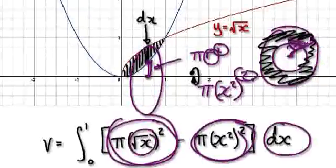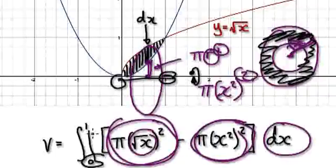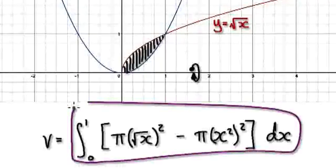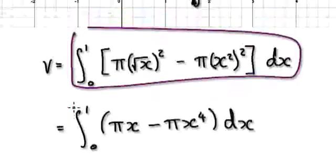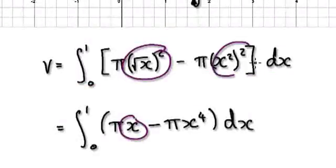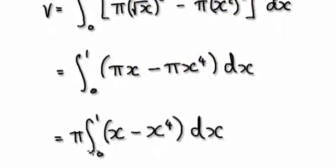You're summing up all the washers from 0 to 1. That gives you this. These cancel out. Factor out the pi — that would then give you this. And then integrate it — it gives you 3π over 10.